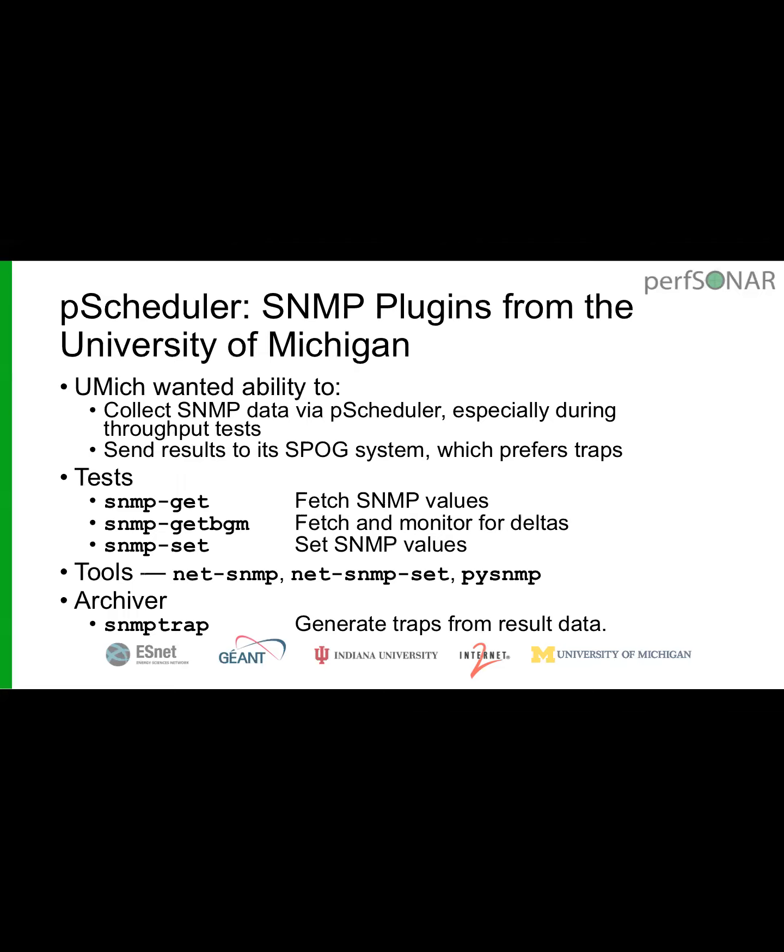The University of Michigan has joined the project this year and contributed new SNMP plugins. They have infrastructure using SNMP to monitor network equipment and wanted to pull counters from equipment during throughput tests. They've developed plugins using standard industry SNMP tools for collecting SNMP data, and because their single-pane-of-glass system prefers SNMP traps, they also wrote an archiver that converts a result into a trap and sends it to a specified destination.